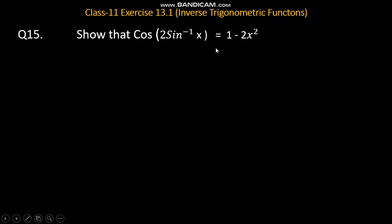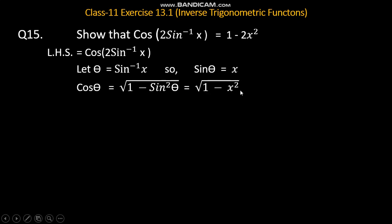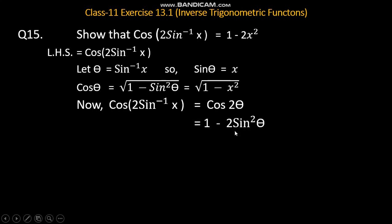Question number 15: show that cos(2 sin inverse x) is equal to 1 minus 2x square. Left hand side: cos(2 sin inverse x). Let sin inverse x equal to theta, so sin theta is equal to x. cos theta is equal to square root of 1 minus sin square theta, यानि square root of 1 minus x square. cos(2 sin inverse x) is equal to cos 2 theta. cos 2 theta का formula होता है 1 minus 2 sin square theta. sin theta की value x थी, so 1 minus 2x square, which is equal to right hand side.